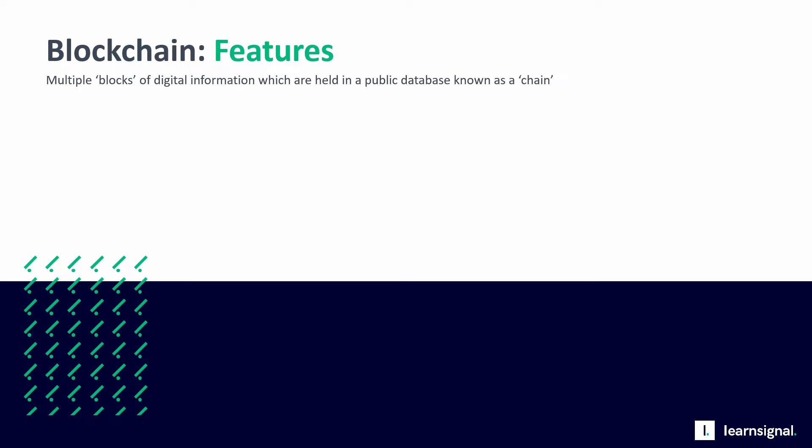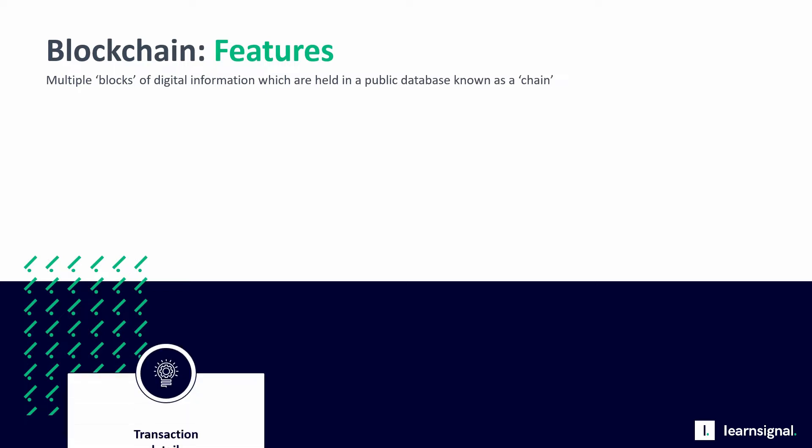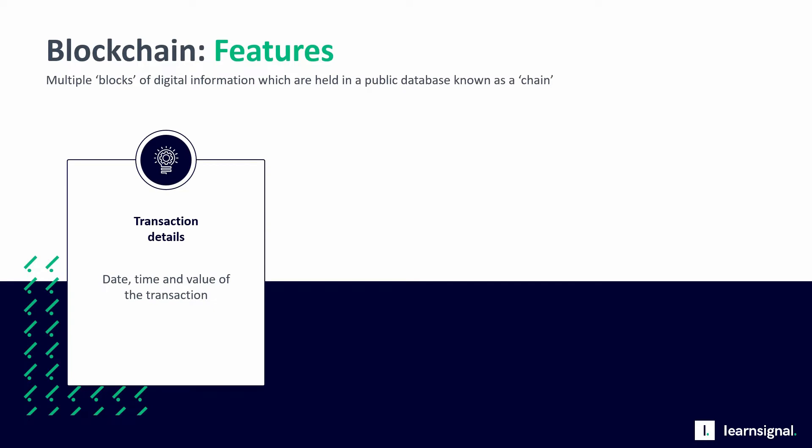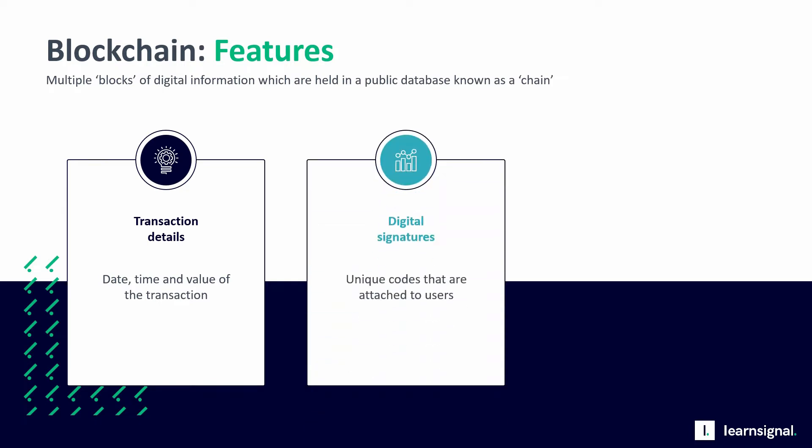The digital information held on each block is made up of transaction details, such as the time, date, and value of the transaction, as well as the digital signatures of the parties involved in the transaction. Digital signatures are unique codes that are attached to users. They allow transactions to be assigned to that user without revealing any information that would reveal their identity.